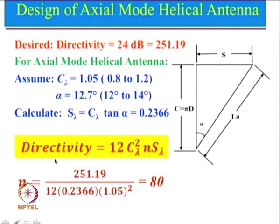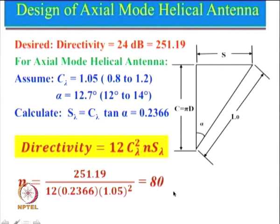Now we know the expression for directivity given by this particular expression. Directivity is known, C_lambda has been assumed, S_lambda has been calculated. We can find the value of n by substituting all these values, and that comes out to be 80. This is a very large number, which means the entire helical antenna length will be very large.